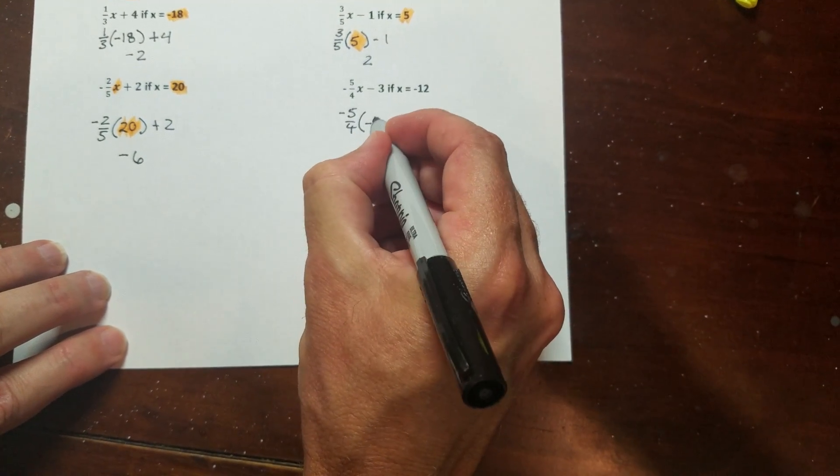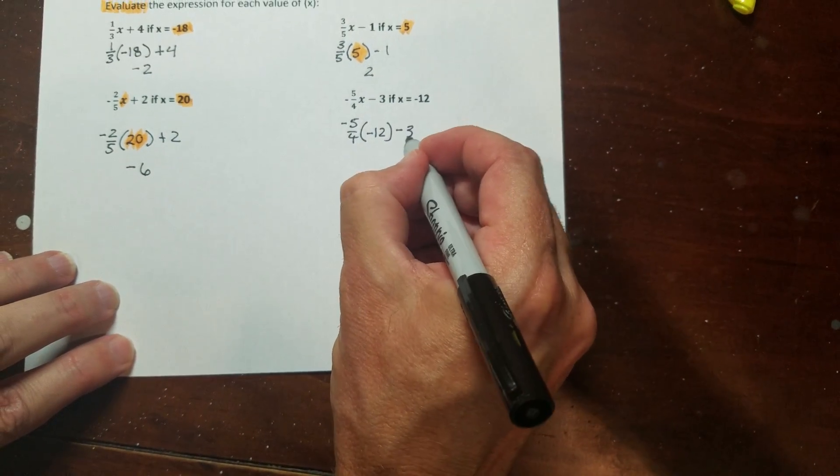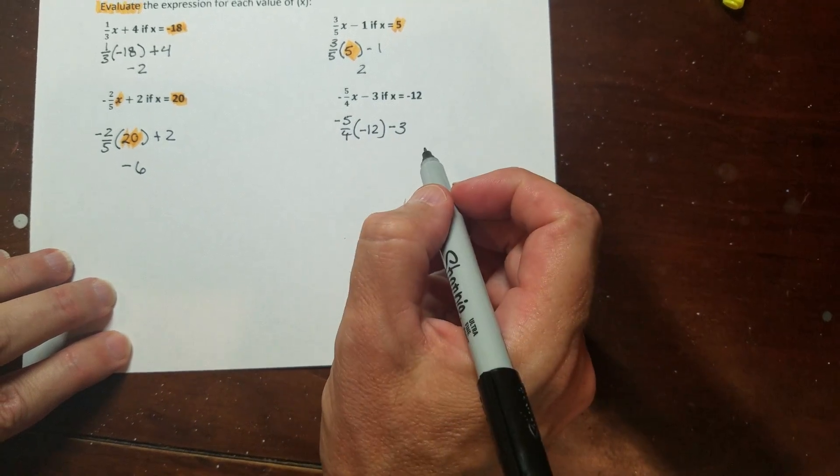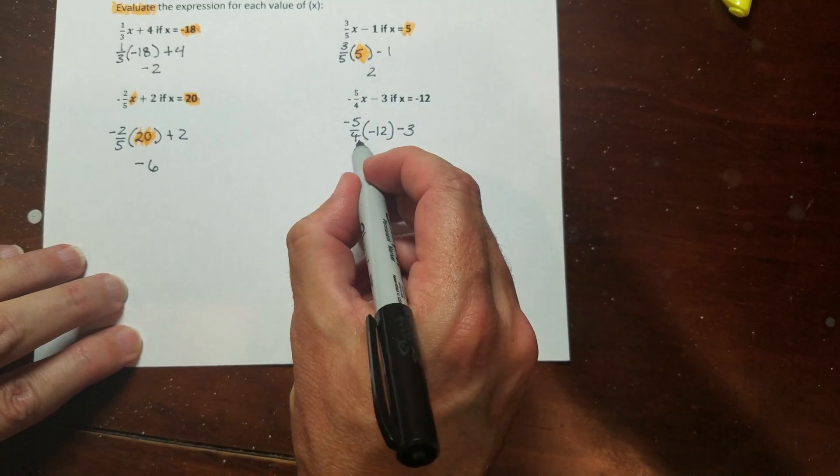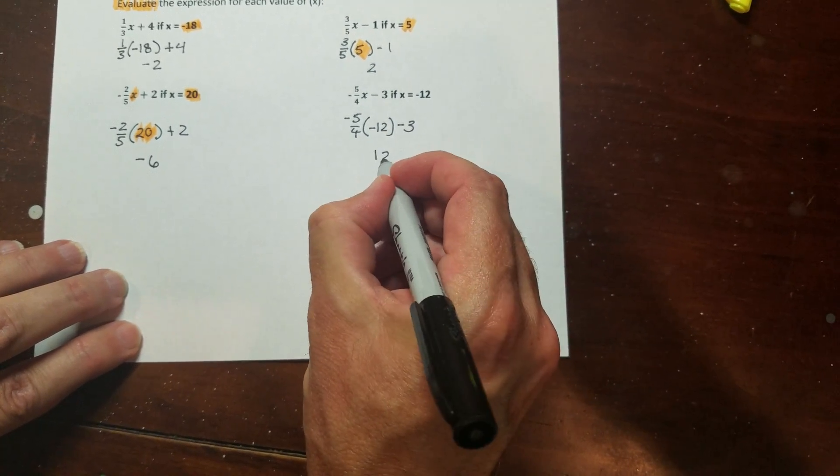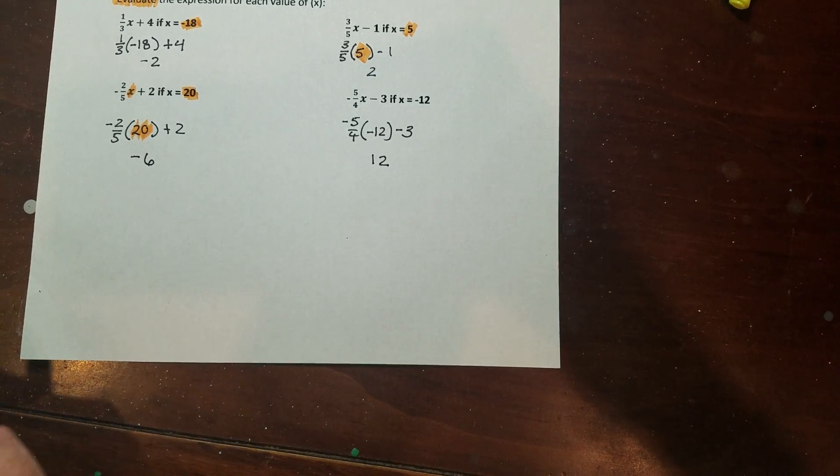And then this last one over here, I'm going to put in negative twelve minus three. Four goes into negative twelve, negative three times. Negative three times negative five is fifteen. And fifteen minus three is twelve. So that's all there is to it, that's how you find the fraction of a whole number.